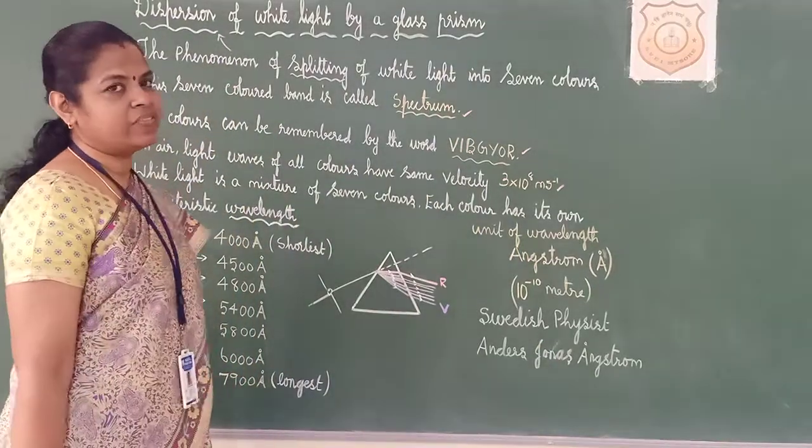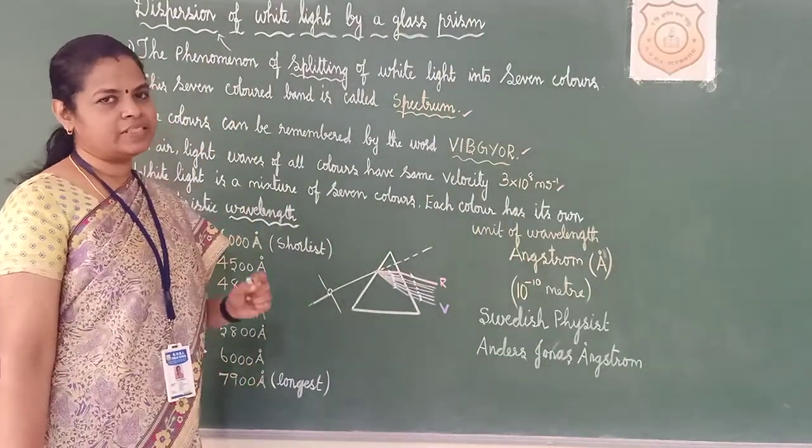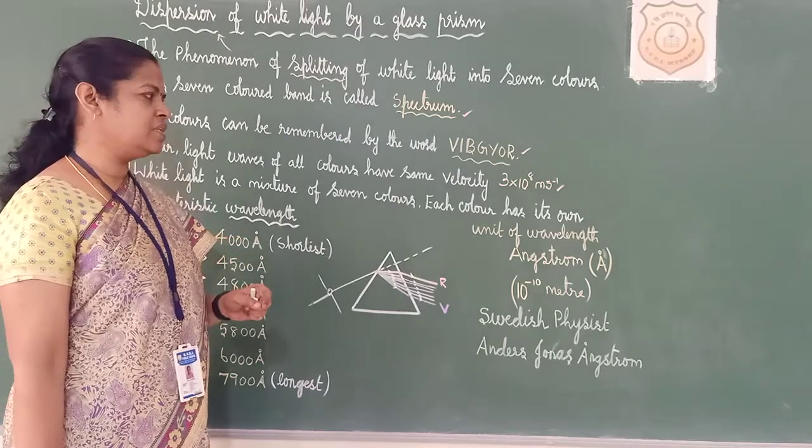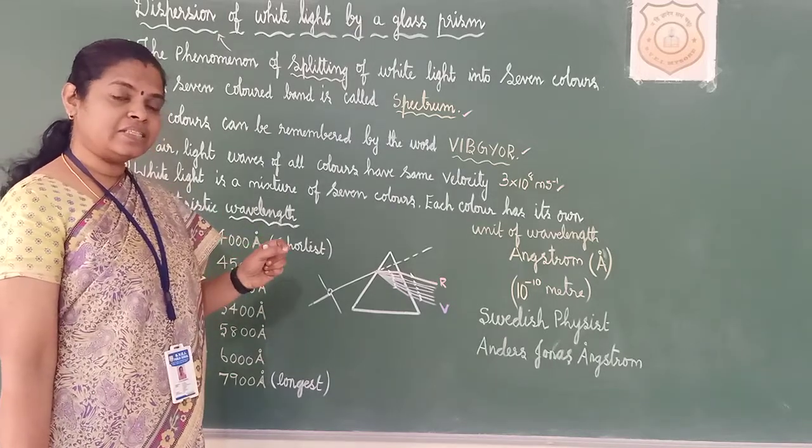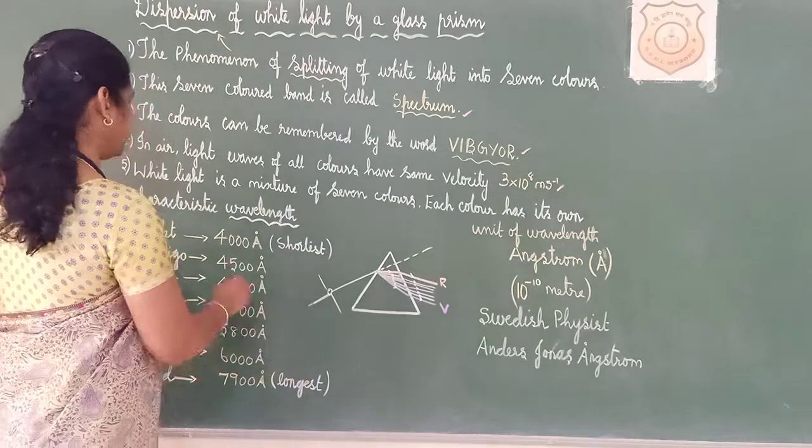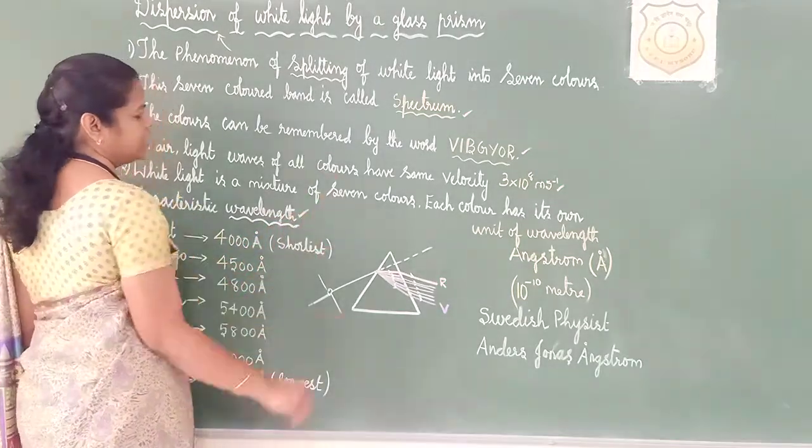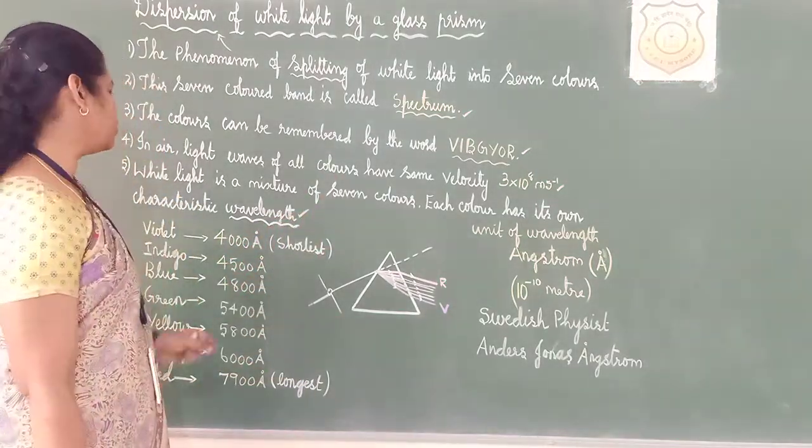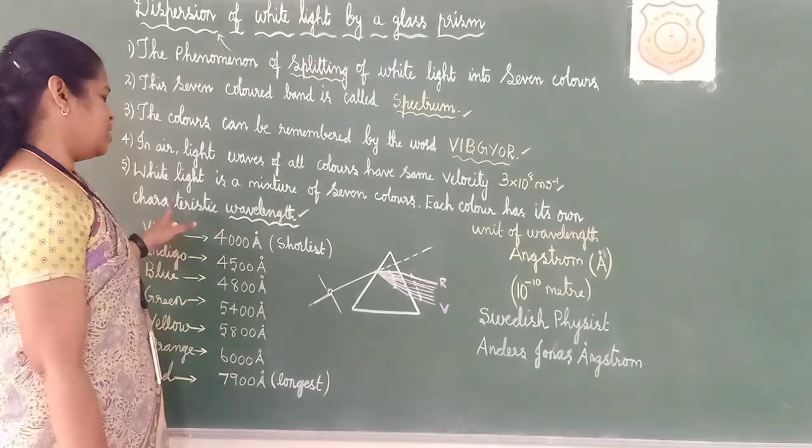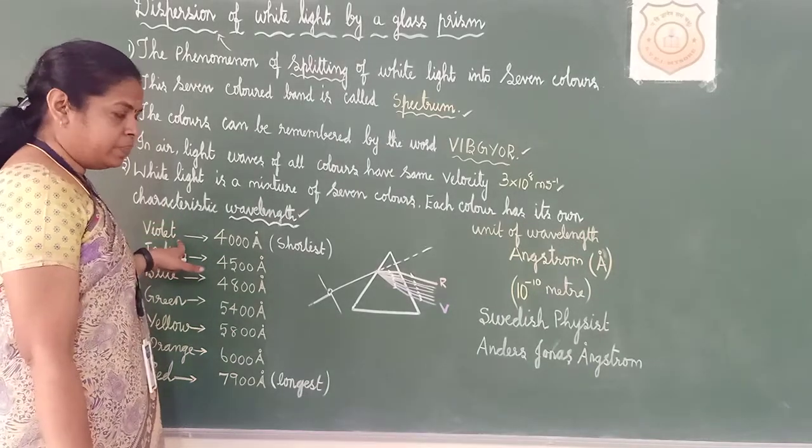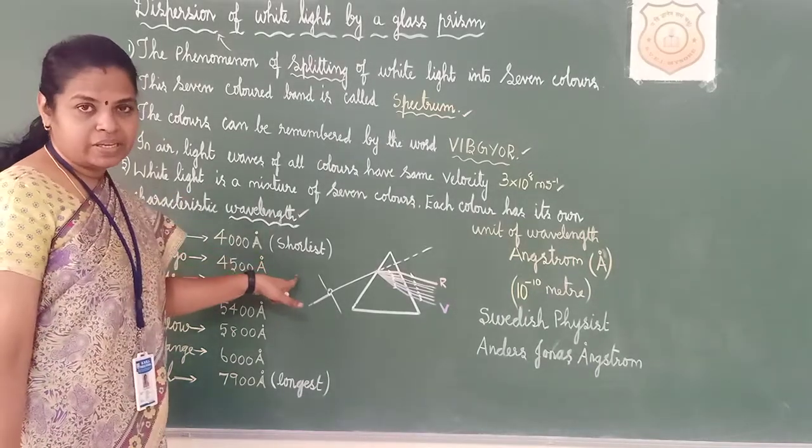White light is a mixture of seven colours. We know that. White light is a mixture of seven colours. Each colour has its own wavelength. That is very important. Each colour has its own wavelength.